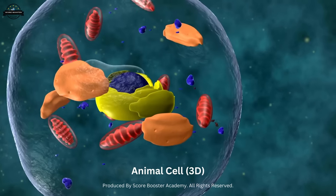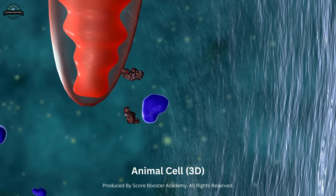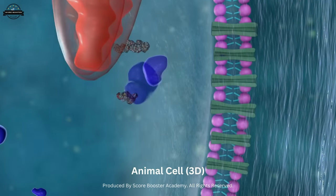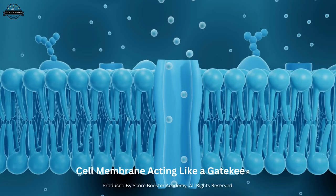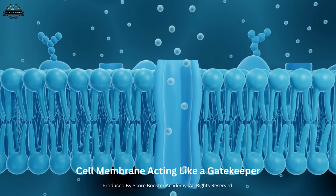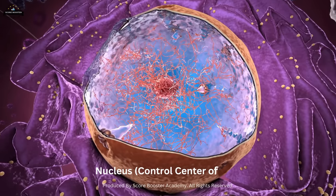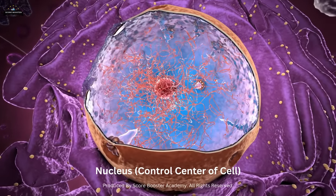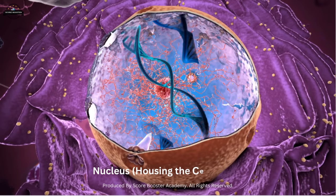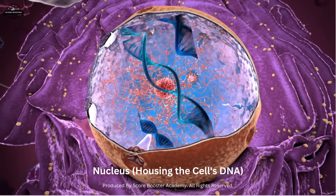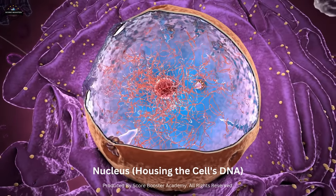In an animal cell, we have a protective outer boundary called the cell membrane. It acts like a gatekeeper, controlling what goes in and out of the cell. Inside, we find the nucleus, often referred to as the control center of the cell. It houses the cell's DNA, the genetic blueprint that holds the instructions for all cellular activities.